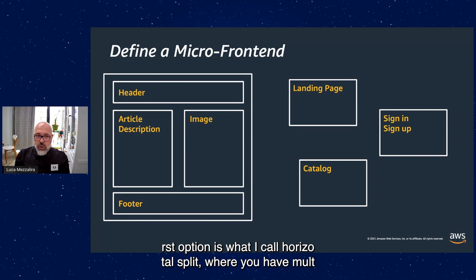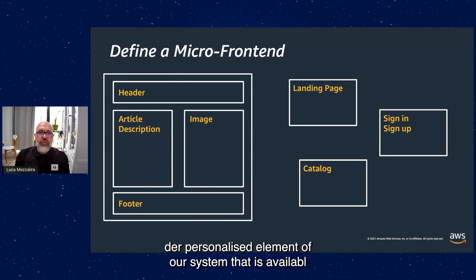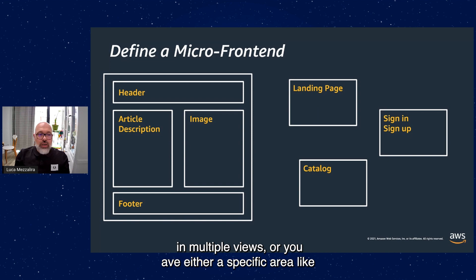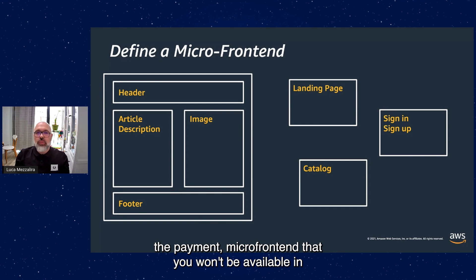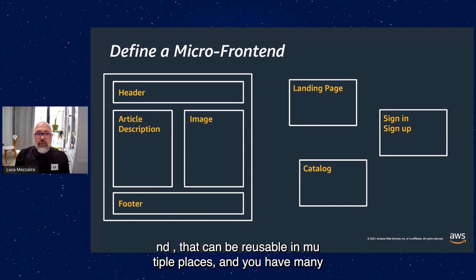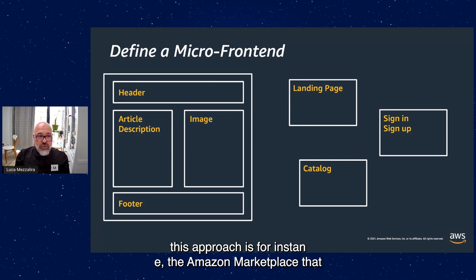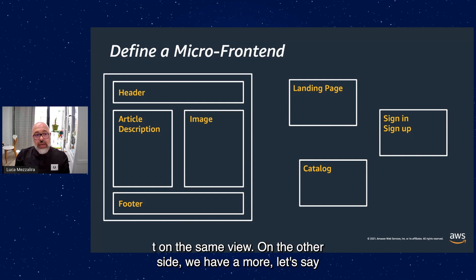The first option — horizontal split — is where you have multiple teams operating in the same view. A classic use case could be an e-commerce where you want personalized elements available in multiple views, or a payment micro-frontend available in different flavors across different views. This is the use case when a micro-frontend is reusable in multiple places and you have many teams working together. A classic example leveraging this approach is Amazon Marketplace, which uses this model of multiple teams working on the same view.